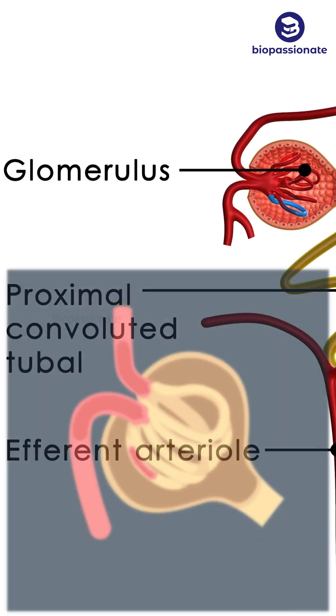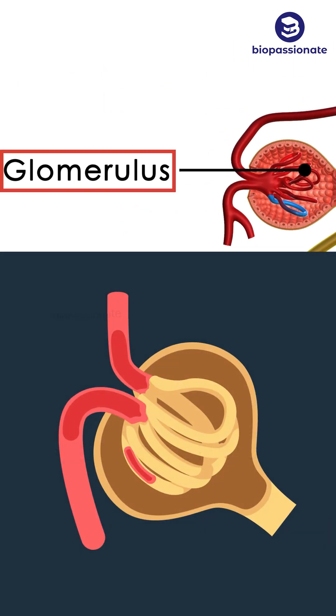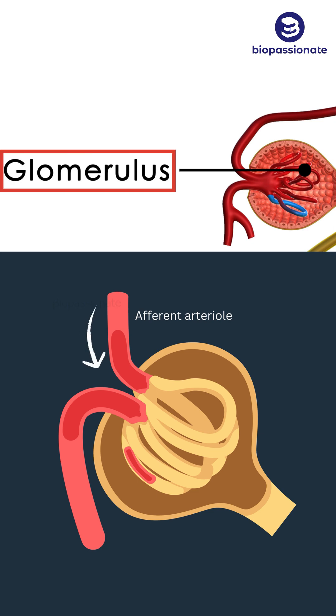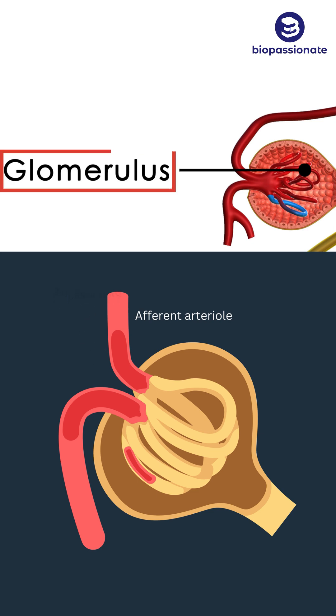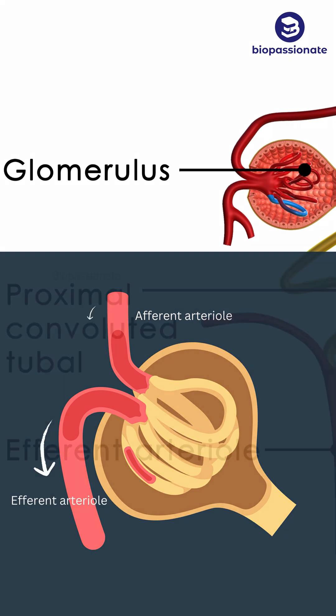The glomerulus is a tuft of capillaries formed by the afferent arteriole. Blood from the glomerulus is carried away by an efferent arteriole.